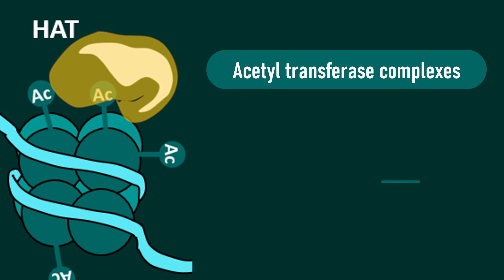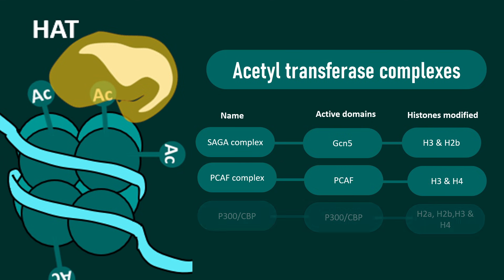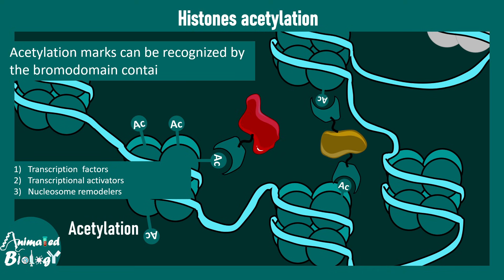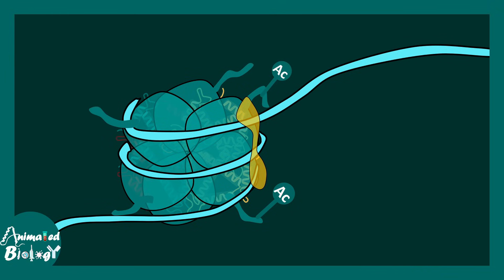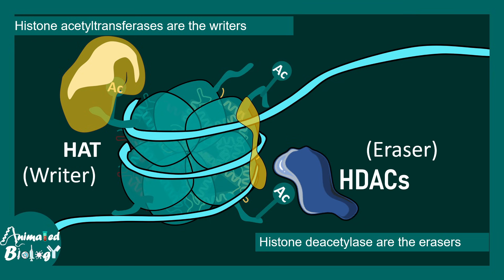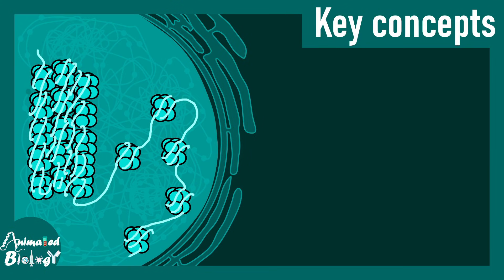Acetyltransferase complexes present in the cell include, for example, the SAGA complex, PCAF complex, and p300/CBP complex — all known to modify different types of histones via their active domains. Histone acetylation is recognized by specific bromodomain-containing proteins; many proteins such as transcription factors, transcription activators, or nucleosome remodelers may have bromodomains in their structure. HATs are the writers, but the erasers are HDACs — histone deacetylases — which remove the acetyl mark.